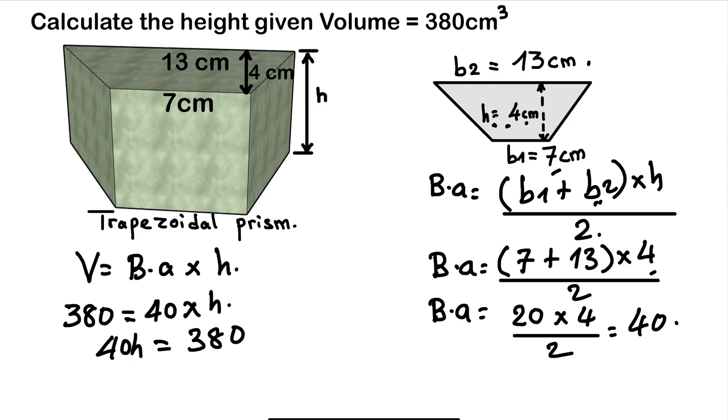So we have a linear equation. So to get the value of h, we need to divide by 40 on both sides. Or we just divide by 40 is still the same thing. So that h will be left alone. So h will be equal to 380 divided by 40.